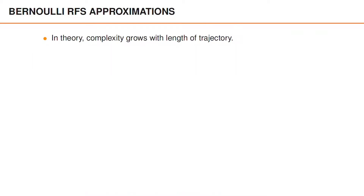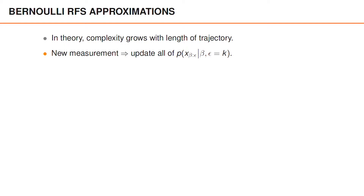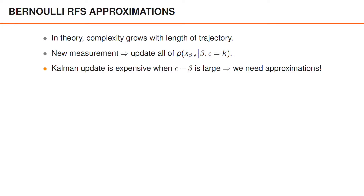A disadvantage with this approach is that the complexity grows with the length of the trajectory. If we assume that data is processed recursively, every time we include a new measurement in a local hypothesis, we need to update the spatial PDF of the entire state sequence. This corresponds to performing a Kalman filter update of the entire vector x_beta to epsilon. If epsilon minus beta is large, this vector is long, and it becomes expensive to perform the Kalman filter updates.